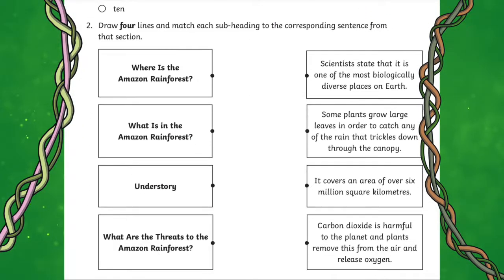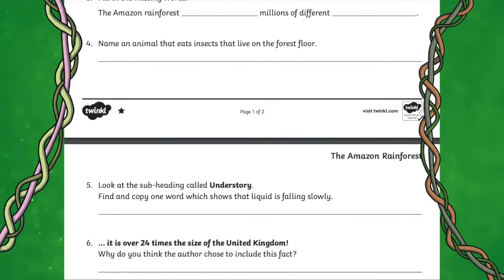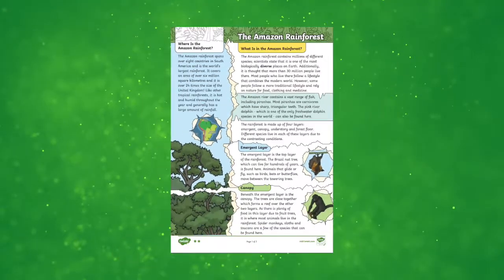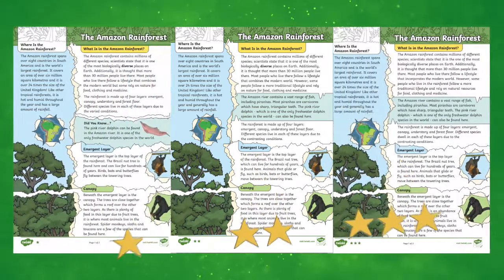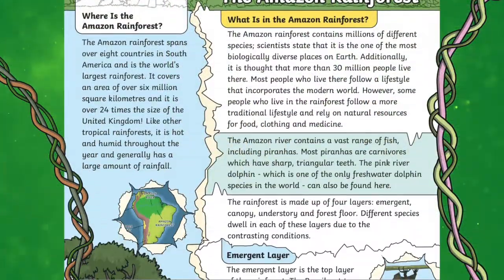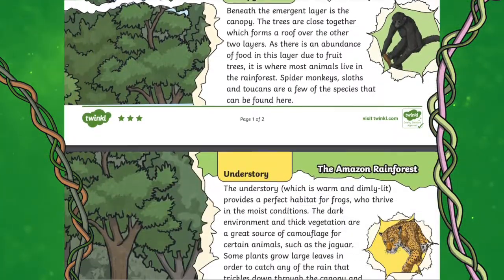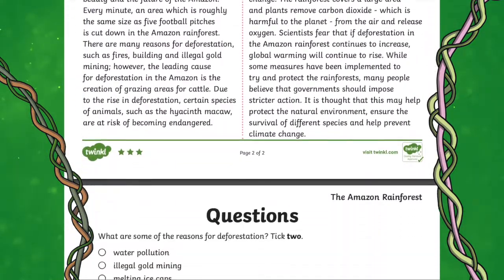Find out the different species that live there and the threats facing the Amazon rainforest. The resource is differentiated three ways and contains three sets of questions and answers. Full of fascinating facts, this comprehension is perfect to use in a cross-curricular English and geography lesson or as an interesting home learning challenge.